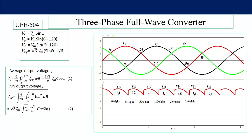Just like a single-phase dual converter, two three-phase full converters are connected back to back to obtain four-quadrant operation — one converter operates as a rectifier while the other operates as an inverter. Since the single-phase dual converter has already been discussed in detail, the three-phase dual converter will not be discussed here.